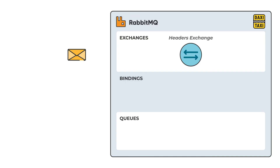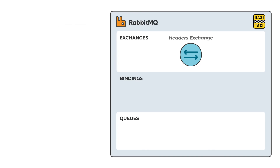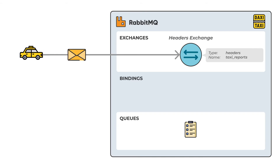Headers exchanges are very similar to topic exchanges, but route messages based on the header values instead of routing keys. Headers exchanges are not very common, but in our example it is used by a reporting service at the taxi company. Taxi car status data is sent to the exchange every now and then, and this data is used to build reports by other parts of the system. A special argument named X-match, added in the binding between exchange and queue, specifies if headers must match all or any.